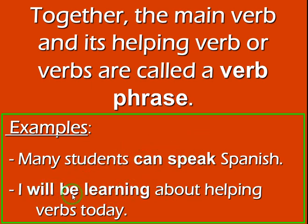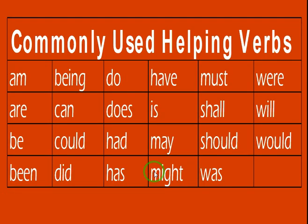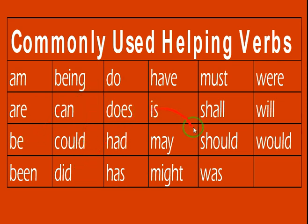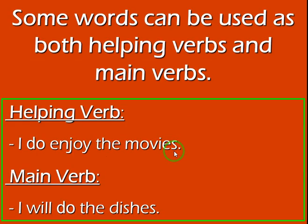In 'I will be learning about helping verbs today,' will be learning is the verb phrase. There are two helping verbs — will and be — and the main verb is learning. Commonly used helping verbs include: am, is, are, be, being, been, can, could, do, does, did, may, might, shall, and will.